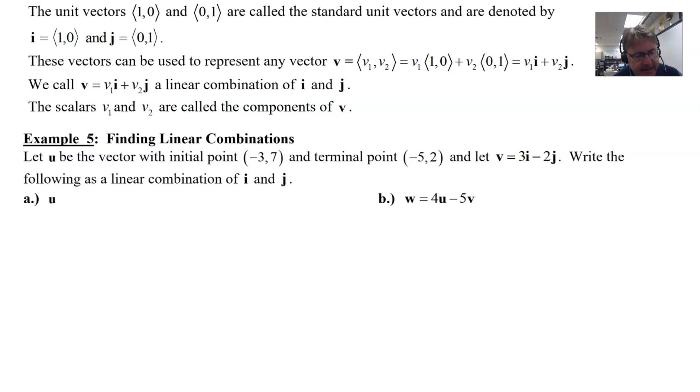The unit vectors (1,0) and (0,1) are going to be the two most common unit vectors, and they're called standard unit vectors. Because they're used so often throughout mathematics, we give them special names: we call them i and j.